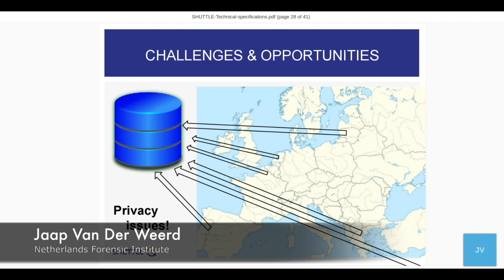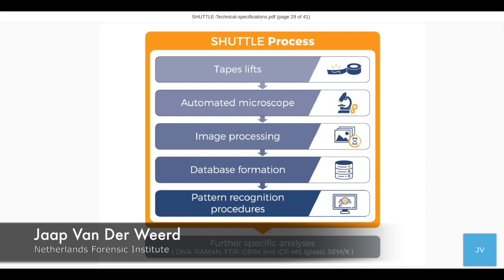There are also challenges, of course. Privacy: if we have a single database storing items from the Netherlands, France, Israel, Portugal, and Lithuania — if we store all case file numbers and names of suspects and crime scenes — we will have terrible privacy issues. We will not be allowed by our directors, our countries, or our prosecutors to store all those data in a single database. So we have to be very careful about the database design, so that relevant things are stored but case-related information is not.